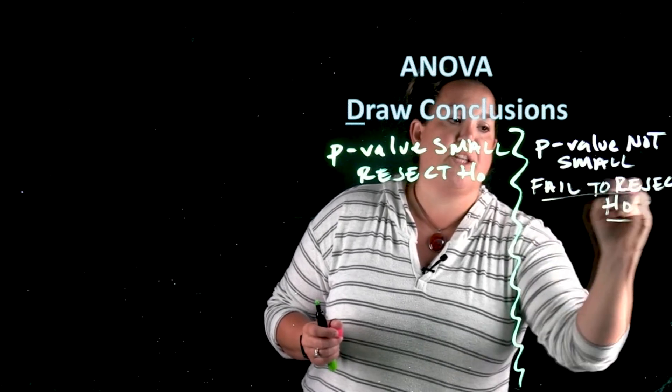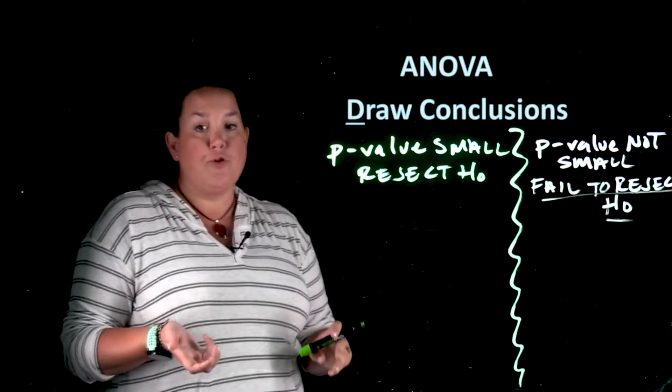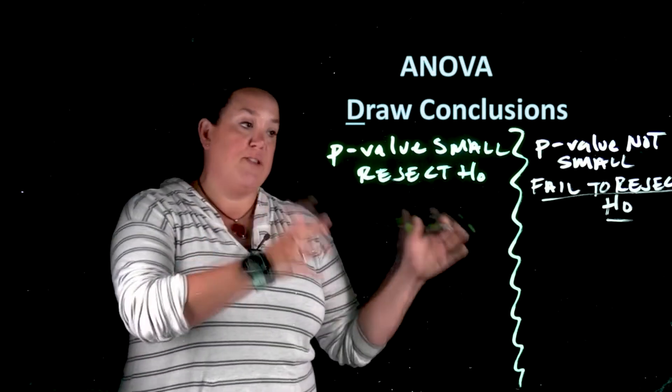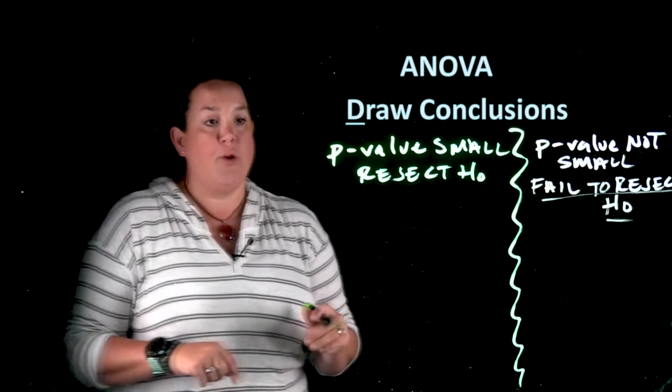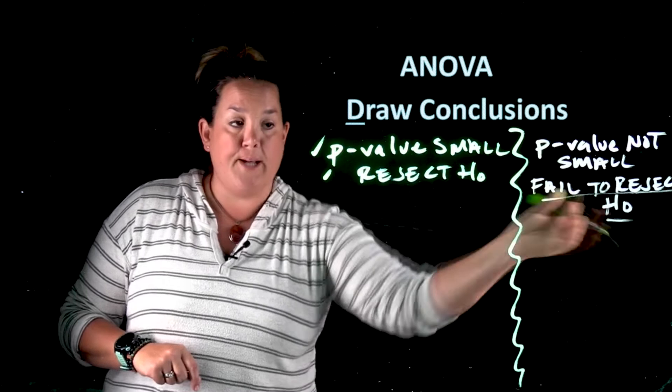And remember that we would say in that situation you fail to reject the null. And remember we say fail to reject instead of accept because when you do these hypothesis tests you're doing them to see if there's evidence to go against the null not to prove the null. So these things go together. Remember you never blend the two lines.